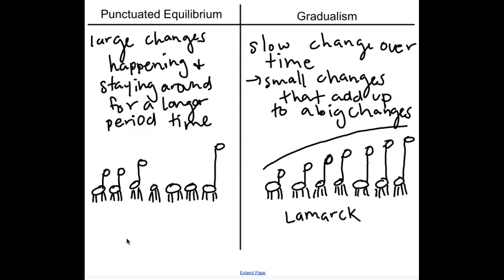Then a drought happens, and all of a sudden there's pressure on the ecosystem and very high competition to get food. All of the short-necked giraffes realize this long-neck giraffe can get food really well. So the other giraffes want to breed with this individual. When they have babies with him, his genetic mutation gets passed on to their offspring, and this happens for many, many generations.